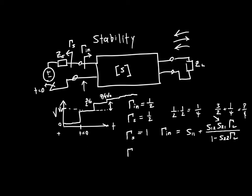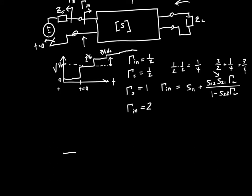Let's say gamma_n equals two. The same thing happens as before — we've got an incoming voltage wave of value V0, but when it's reflected, instead of one-half V0 being added, two V0 is added and we go up to three V0. That wave travels back and gets reflected by the source, adding another three V0. Then six V0 is added by further reflection at the input, then six V0, then 12 V0. You can see that it just blows up to infinity. This is clearly a problem — this is an unstable system.